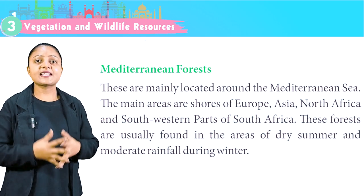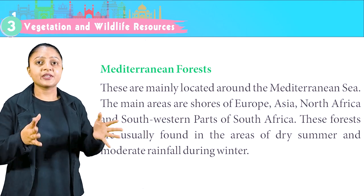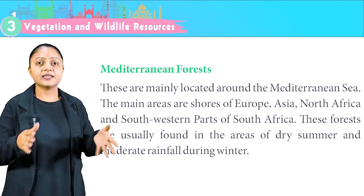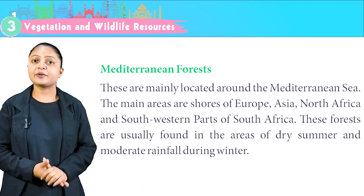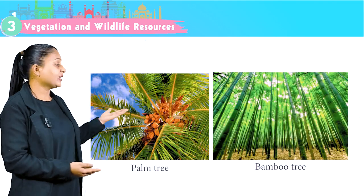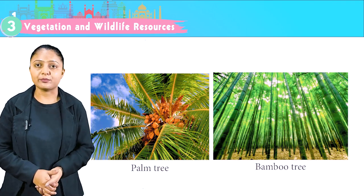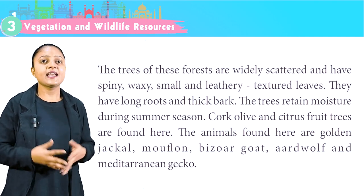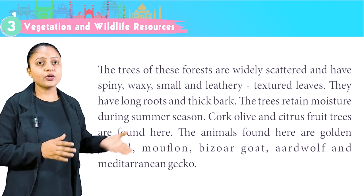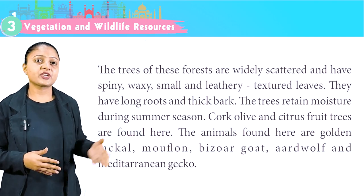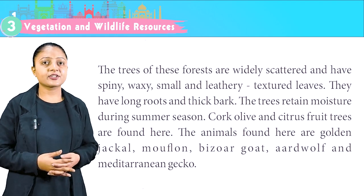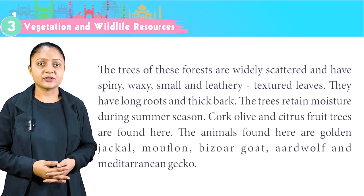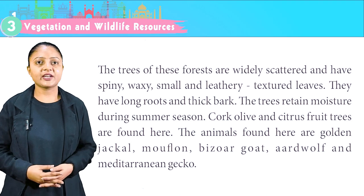Mediterranean forests are mainly located around the Mediterranean Sea. The main areas are shores of Europe, Asia, North Africa and southwestern parts of South Africa. These forests are usually found in areas of dry summer and moderate rainfall during winter. The trees are widely scattered and have spiny, waxy, small and leathery-textured leaves. They have long roots and thick bark, retaining moisture during summer. Cork, olive and citrus fruit trees are found here. The animals found here are golden jackal, muflon, bizarre goat, wolf and Mediterranean gecko.